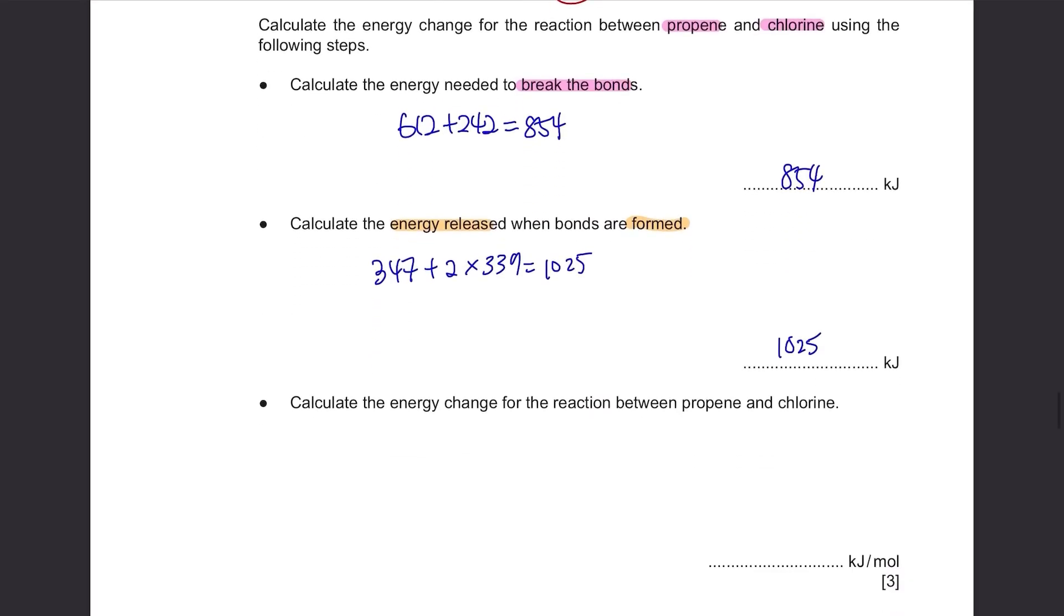Calculate the energy change for the reaction between propene and chlorine. To find the energy change, subtract the energy released when bonds are formed from the energy needed to break the bonds. 854 minus 1025 equals negative 171. Or you can just memorize that when you want to break the bonds, the energy is in positive, but when you want to form the bonds, the energy is in negative.